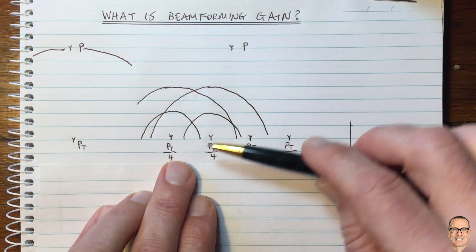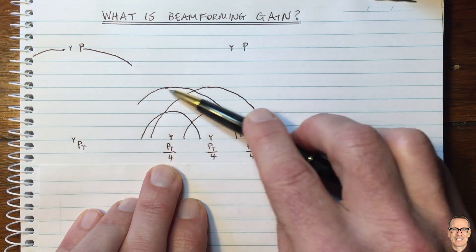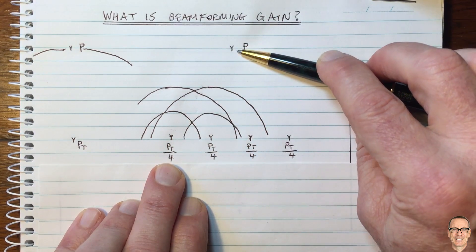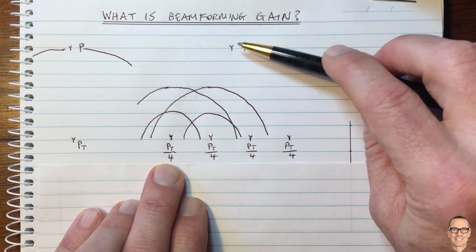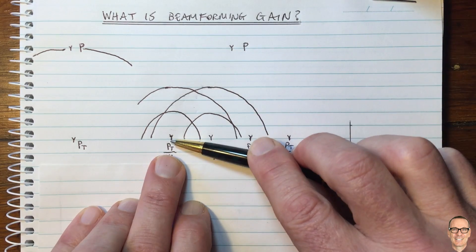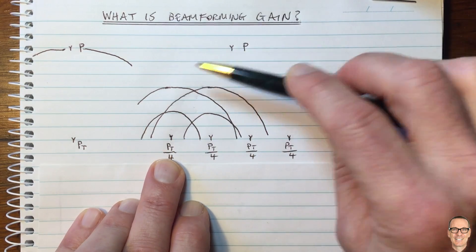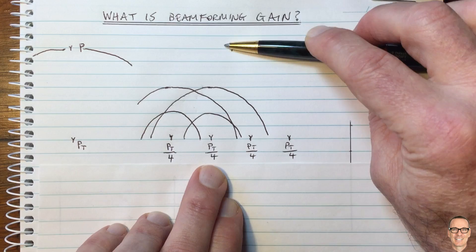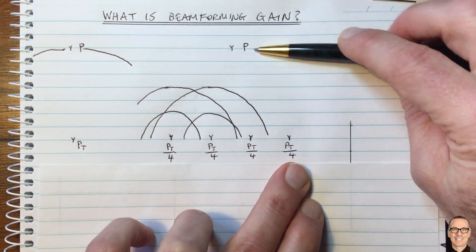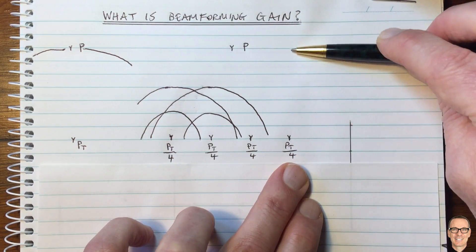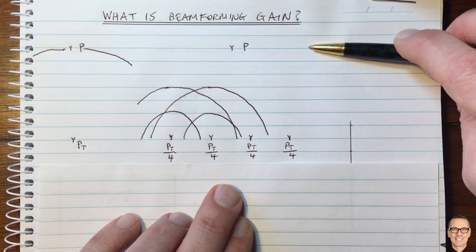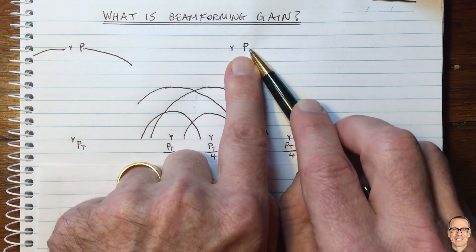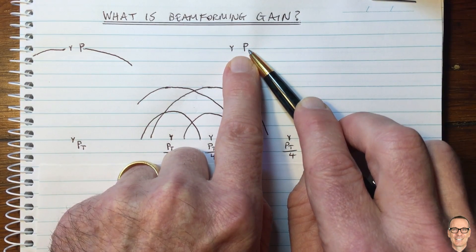And naively we might be thinking that from this antenna here, after that distance out to the receiver, you'd be receiving P divided by four from this one with a peak, and P divided by four from here with a peak, and the same for the other two. You're getting four peaks adding constructively, each with P divided by four. So naively you would think that the peaks would be adding constructively to give you P.